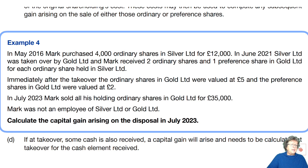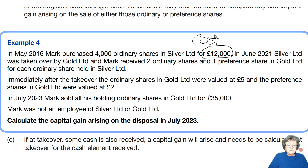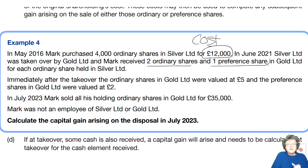In May 2016, Mark purchased 4,000 ordinary shares in Silver — that's the original cost of those shares. In June 2021, Silver was taken over by Gold, and Mark received two ordinary shares and one preference share — a mixed consideration — for each ordinary share he held. Sometimes with these the wording can be a little ambiguous, so be careful to read the question carefully to see what you're getting.